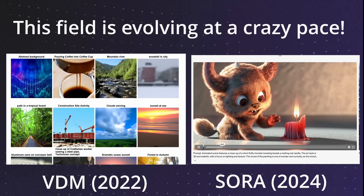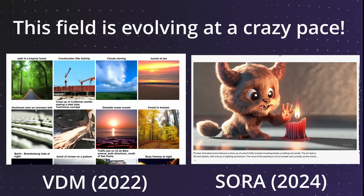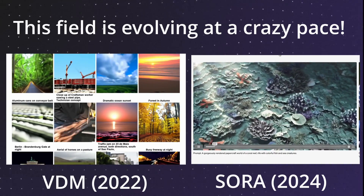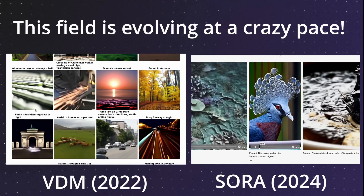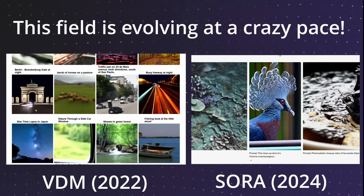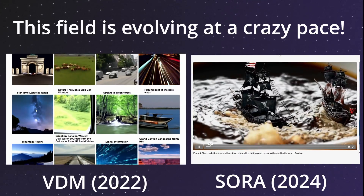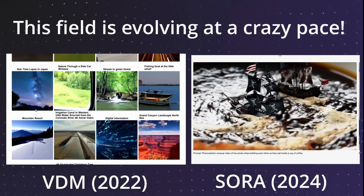Take a moment and think about how complicated the task of text-to-video generation really is. To produce a coherent video, the neural network needs to understand the input prompt, know how the world works, how objects move across space, how physics happens, and then produce a sequence of frames that are both spatially, temporally, and logically sensible. Despite all of these challenges, today's diffusion neural networks are still getting quite good at it. In this episode of Neural Breakdown, we will learn how modern diffusion models generate video from text. Let's go.